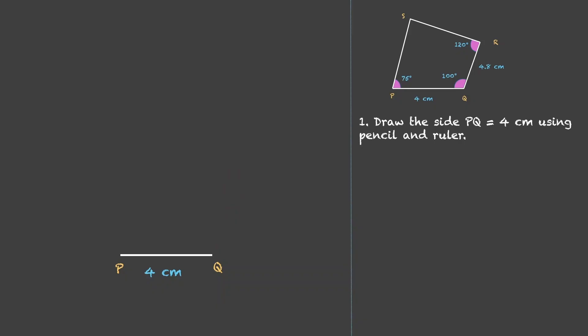Now we need to make 100 degrees at Q. So since 100 is not a standard angle, we can draw this angle using protractor. So we construct an angle of 100 degrees at Q and then we will make an arc of 4.8 centimeters, and wherever that arc will intersect we call that point as R.